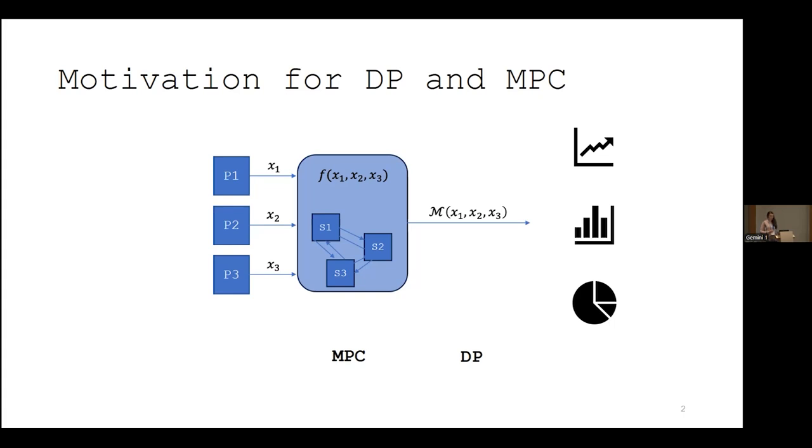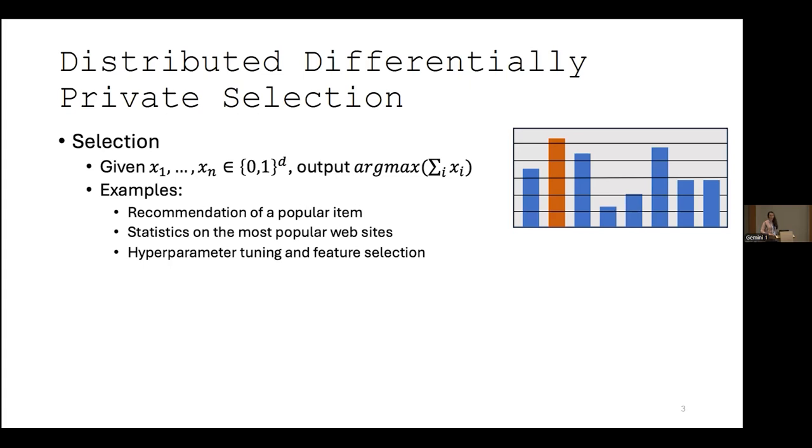Both MPC and DP can be used in a wide range of data analysis with applications in machine learning and beyond. And specifically in this talk, I'll be focusing on the selection problem, which is that given n d-dimensional binary vectors, we'd like to output the argmax of the sum of those vectors. Examples where this is relevant in practice include things like recommendation of a popular item on a webshop based on user feedback, computing statistics on popular sites on the internet, or in a machine learning context, hyperparameter tuning and feature selection.